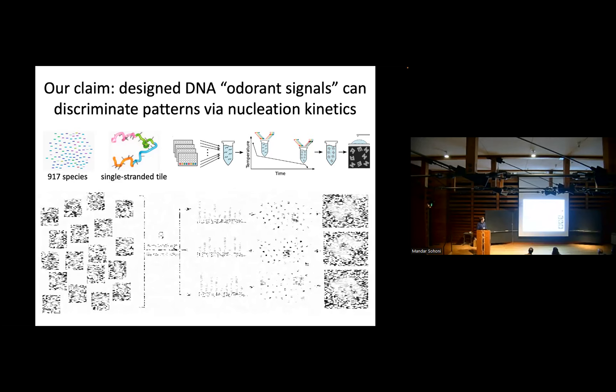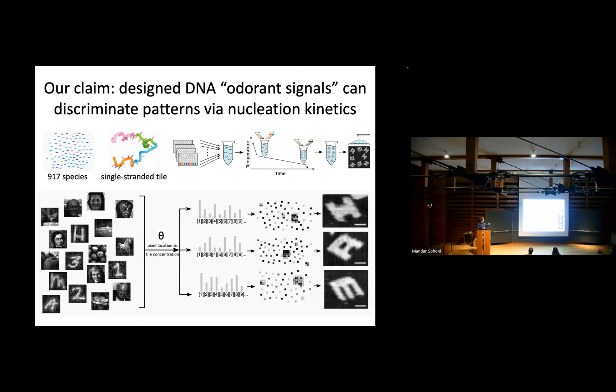So we're going to, sort of at the end of the day, show you that one can take a set of images. Here's the actual images that we used in our experiments. There are 18 of them. Here's some map from pixel location, which corresponds to, say, an odorant species, to which DNA molecule gets produced by that odorant. And so a particular image will correspond to a particular pattern of concentrations of the DNA molecules. Based on those concentrations, the self-assembly process will nucleate in different ways, form a different structure.